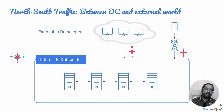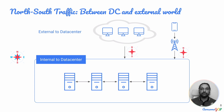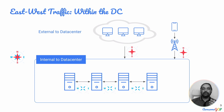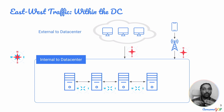If there is any traffic coming from devices that are external to the data center and it is entering the data center under consideration — say the public data center you're working with — or if it is exiting and going to the outside world, then that is considered north-south traffic. Any traffic between machines within the data center would be considered east-west traffic.